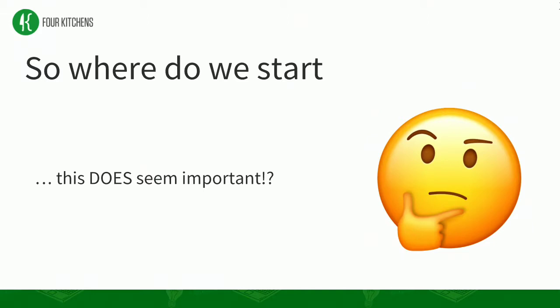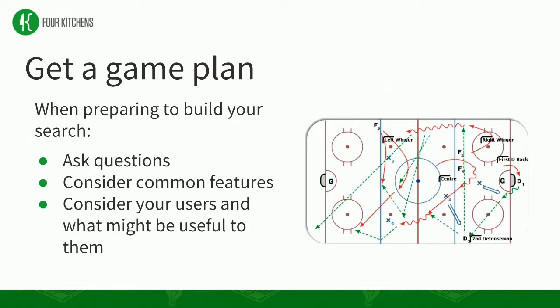So where do we start? It's a very important topic. What we like to do is get a game plan. With any major feature you've got to have some kind of outline and know where you're going to go. It's important to ask questions and do good requirements gathering. You want to consider common features, but the key thing is don't make it too complex for no reason. Some features might not even be worth having. Also consider your users — are they looking for general information, specific content, media, or an e-commerce experience?